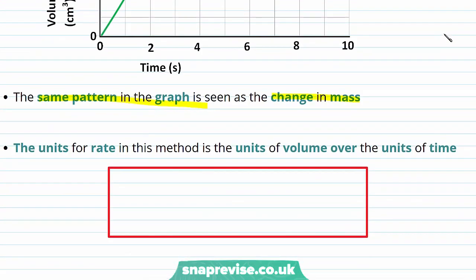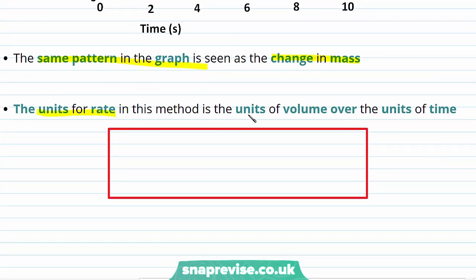As the units of rate depend on the units used to measure the amount of product or reactant, the units for rate in this method are the units of volume over the units of time.